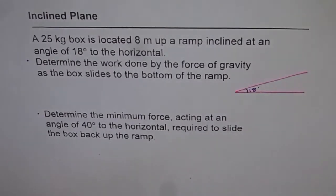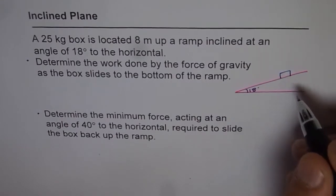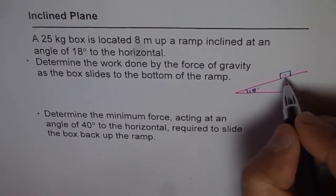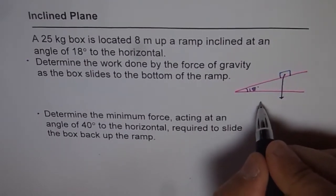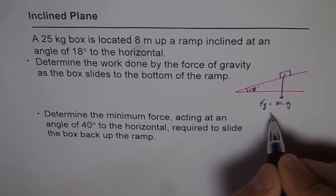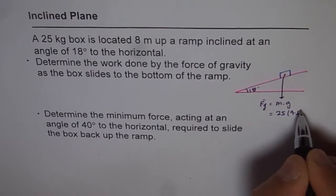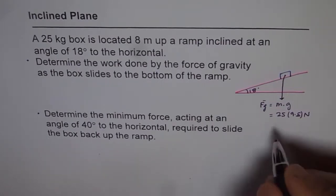What we are given is that there is a box which is 25 kilograms. Since it is 25 kilograms, it will exert a force due to gravity. This force due to gravity is equal to mass times gravity — in this case 25 times 9.8 Newtons. So 25 times 9.8 equals 245 Newtons.